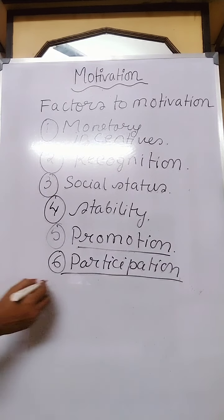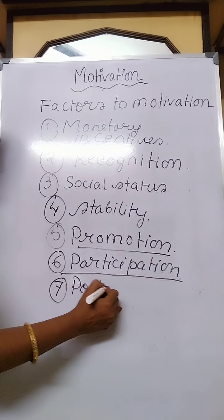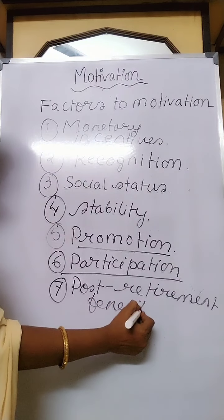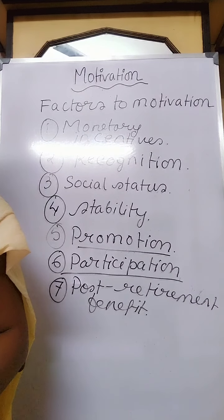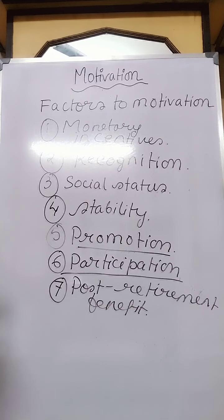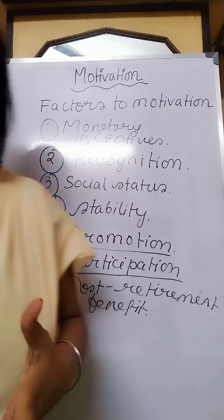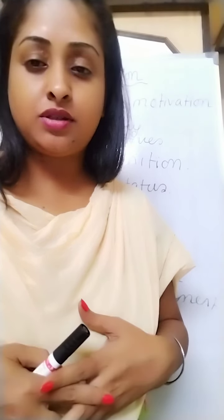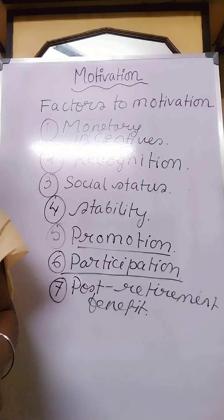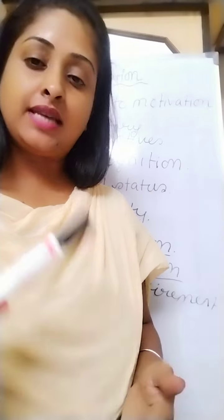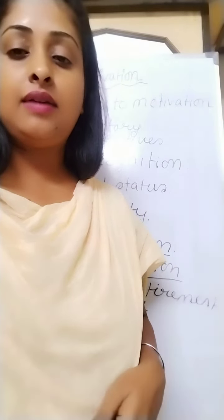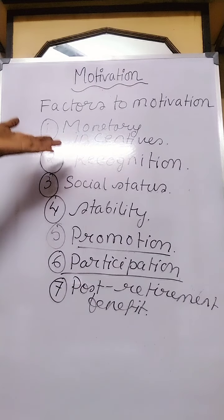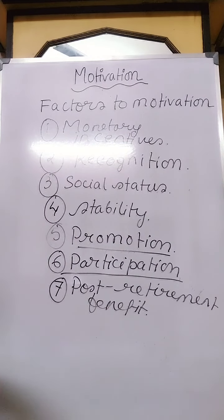The seventh point is post-retirement benefits. Employees generally show more interest in their present work with the hope of getting future benefits. Post-retirement benefits include pension, gratuity, and provident fund. These benefits are associated with the jobs of employees in the organization and act as motivators. If employees know they will receive good benefits after retirement, they show more eagerness in their present work.